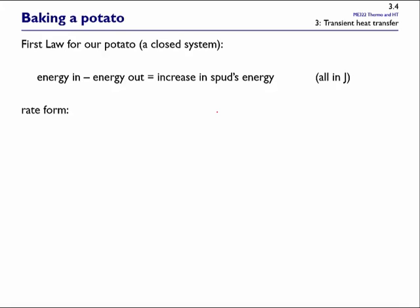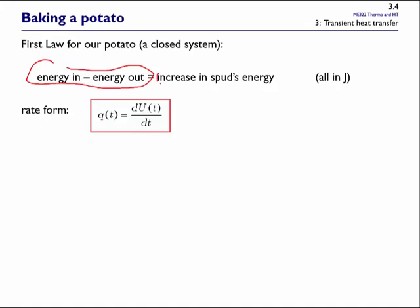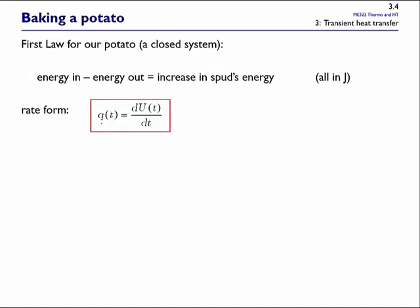We write down the first law of thermodynamics with the potato as a system: energy in minus energy out equals the increase in energy stored in the potato. We can write that in rate form and be more specific. There is no work being done — no mechanical device moving the potato. There are no changes in potential energy or kinetic energy. So the energy transfers are heat transfers only, and the energy stored inside the potato is internal energy — strictly thermal energy. We consider the rate of heat transfer: heat transferred per unit time, in watts.